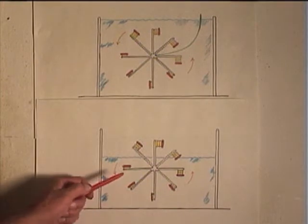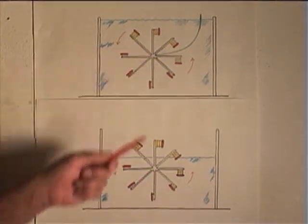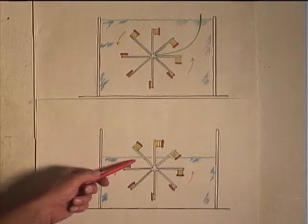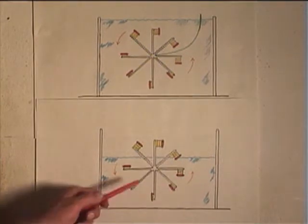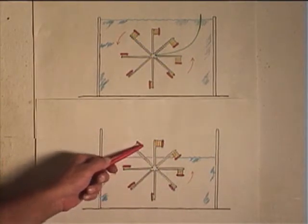There are two significant changes between this wheel and this wheel. First of all, the water level is dropped, so some of the arms come up out of the water.